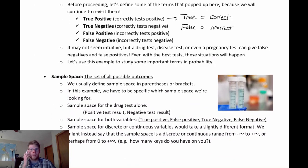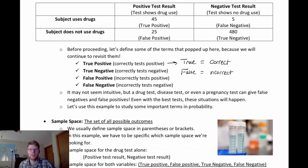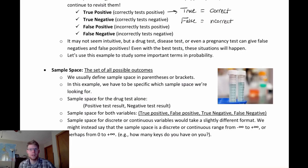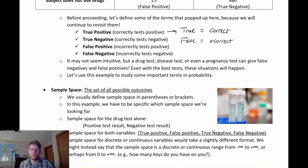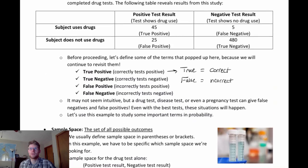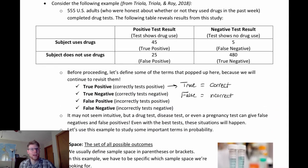Let's also look at a few other foundational terms for probability. A sample space is going to be the set of all possible outcomes in a trial. If we're conducting a test or collecting data, the sample space would be all the different possible outcomes we could find. If the data is categorical, like in this drug test example, we might say there are four different possibilities — or just two if our frame of reference is only the test result (positive or negative). If we're also considering correctness, then we'd consider all four combinations as the sample space.